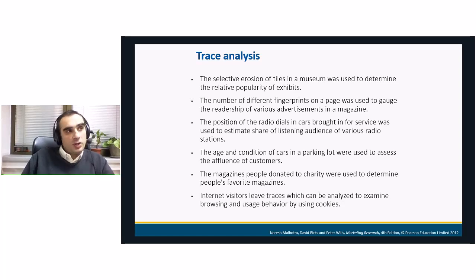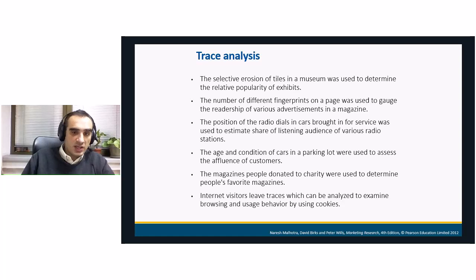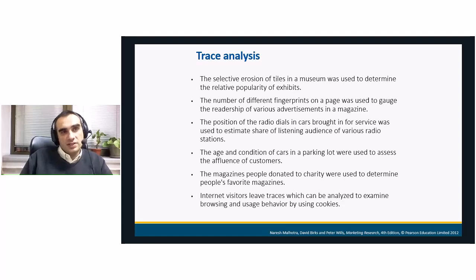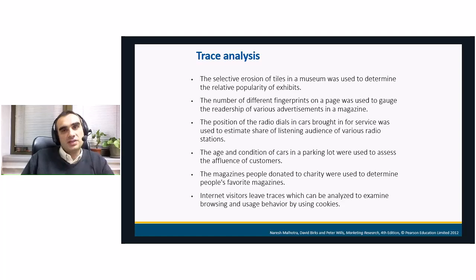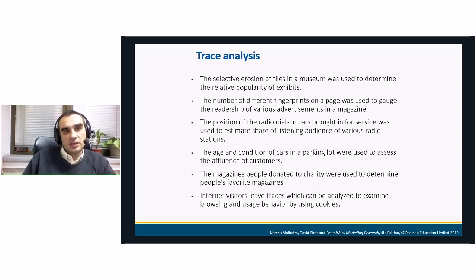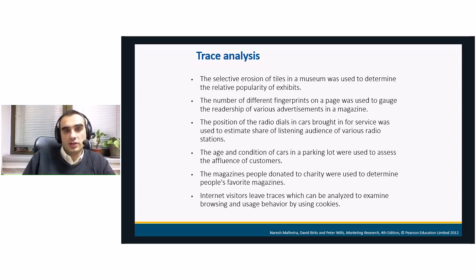Other interesting examples include research on the position of radio dials in cars to see which radio station is most popular. Also, evaluating the social status of respondents by examining the size, age, and condition of cars on a parking lot. Nowadays, internet analysis is also very interesting — when we visit a web page, we leave cookies, and those are used to detect which websites you visited, how long you stayed, and what you particularly looked at. This is also an important part of modern observation research.